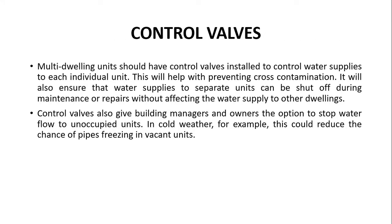Controlled valves must be provided in multi-dwelling or multi-story buildings. Valves are plumbing fixtures that control water flow from one pipe to another — they can stop water altogether or regulate it from a smaller to a larger flow. To avoid contamination of the drinking water plumbing system, we provide controlled valves to each individual unit. This also ensures that the water supply to separate units can be shut off during maintenance or repairs without affecting water supply to other dwellings.